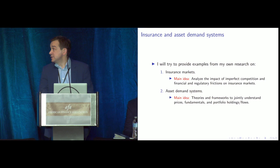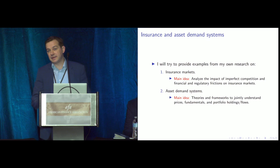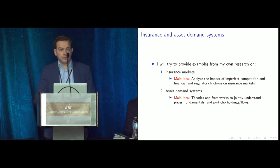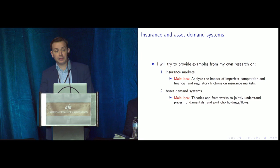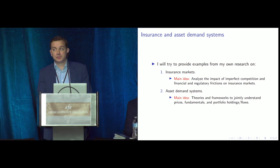Marcus asked me to talk about two agendas we've been working on: one related to insurance markets and one related to asset demand systems and inelastic markets. In insurance markets, there's a lot of work on demand-side frictions — informational frictions like adverse selection and moral hazard. What we've been working on with Motohiro Yogo is thinking about the importance of supply-side frictions: financial and regulatory frictions, imperfectly competitive markets, and what those imply for market existence, contract design, pricing, and the financial fragility of the sector.